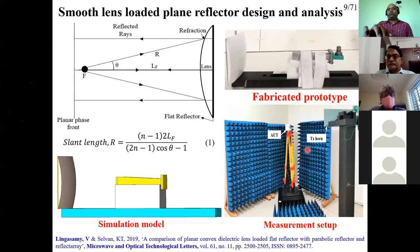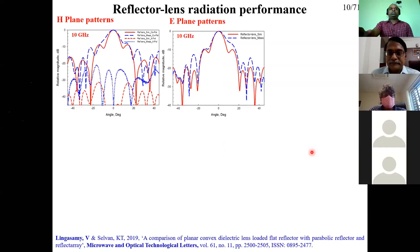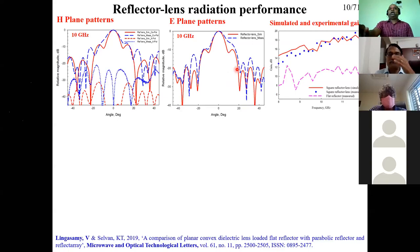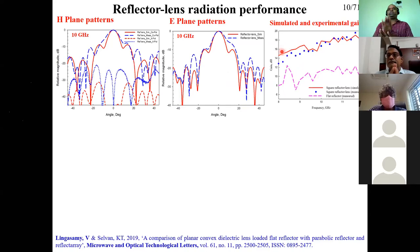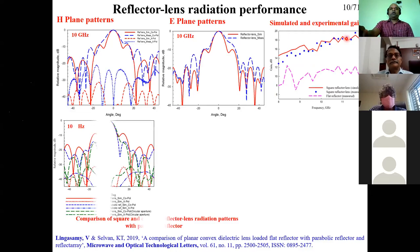For the design, we estimated the slant length using a formula derived from Fermat's principle. A square aperture simulation model was used for comparison with a square reflectarray. We fabricated the prototype and measured it. Initially we tried to measure at a UCM center in Chennai but could not get appropriate slots, so we set up measurements in our own lab — a one-month effort. We used a laser, a positioner, horn antennas procured locally, and optimized absorbers under the guidance of the professor. The experimental and simulation results show fair comparison, with about 5 dB gain improvement contributed by the lens.